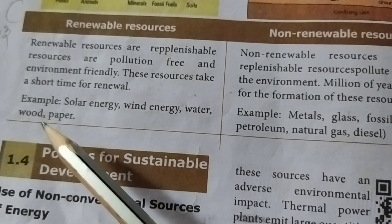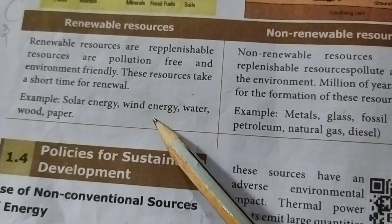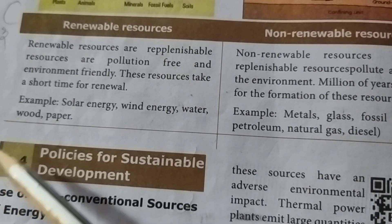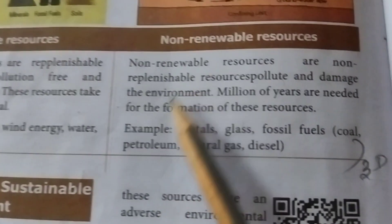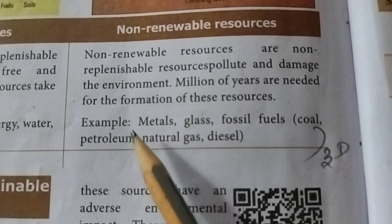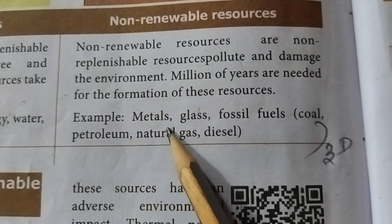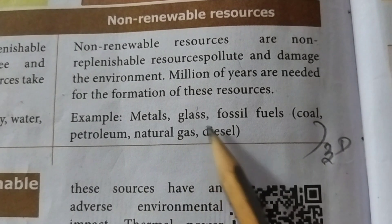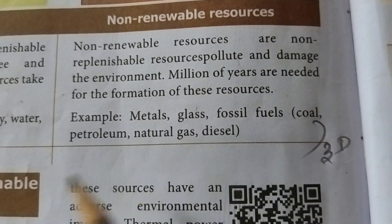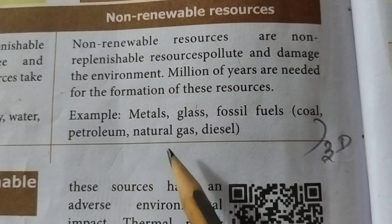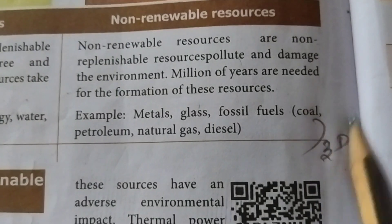Examples of renewable resources: solar energy, wind energy, water, wood, paper. Examples of non-renewable resources: metals, glass, fossil fuels, coal, petroleum, natural gas, diesel.